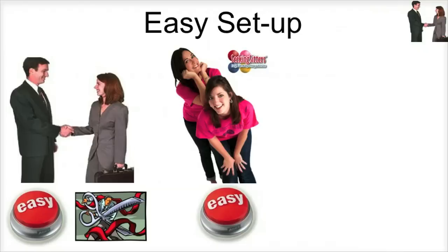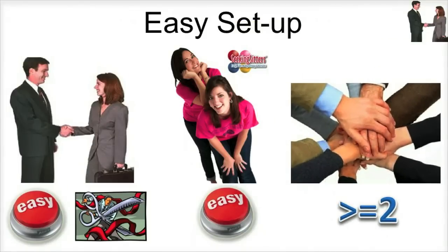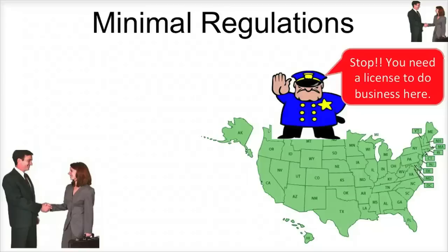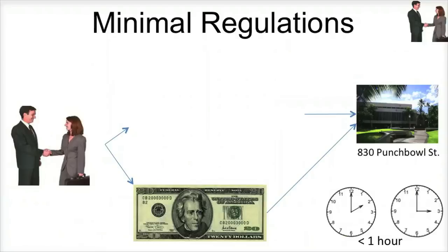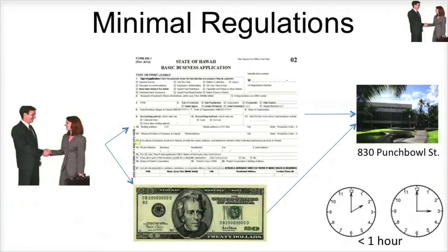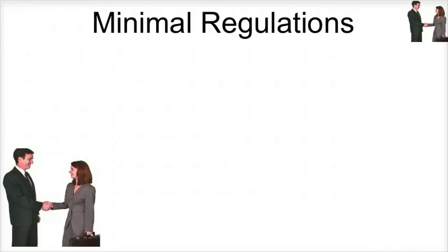Partnerships can have as few as two partners or as many as several thousand partners and are often used by professionals. Minimal Regulations. As with sole proprietorships, states do require partnerships to obtain state sales tax or state excise tax licenses. In Hawaii, the form used for partnerships is the same as for sole proprietorships. Partnerships have no significant regulatory financial reporting requirements unless they hire employees.